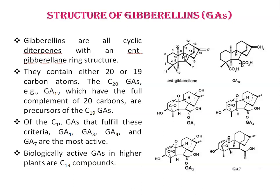Structural requirements for bioactivity include the presence of a 3-β-hydroxyl group and absence of a 2-β-substituent. Of the C19 gibberellins that fulfill these criteria, GA1, GA3, GA4, and GA7 are the most active forms. This means biologically active gibberellins in higher plants are C19 compounds.